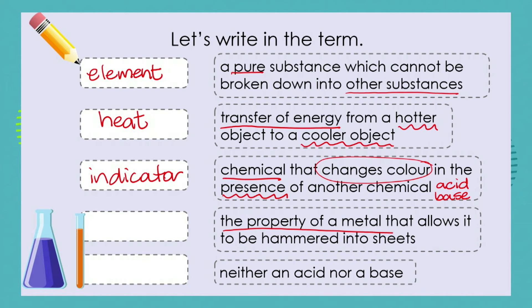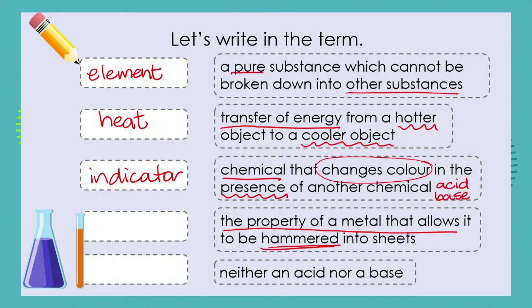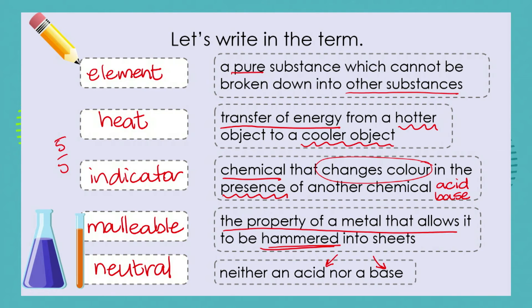Here's our next definition: the property of a metal that allows it to be hammered into sheets. Think of sheets of aluminium making up our cold drink cans, which are lightweight and easily crushed and recycled. The word is malleable. What do we call something that is not an acid but also not a base? You shouted that out very quickly — that is a neutral substance. How many of you got five out of five? Great, sevens — you are absolute stars, well done.